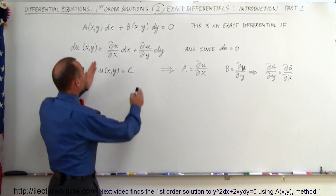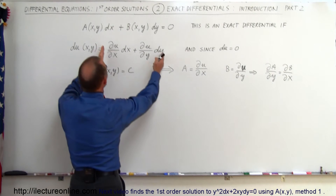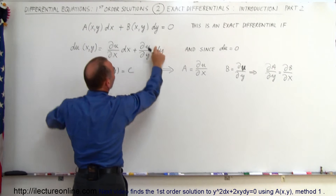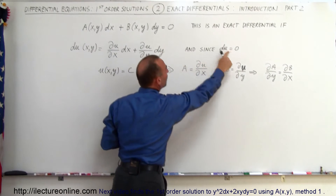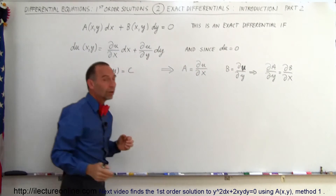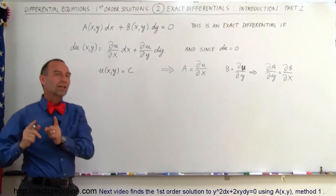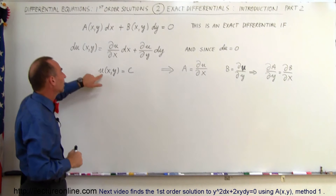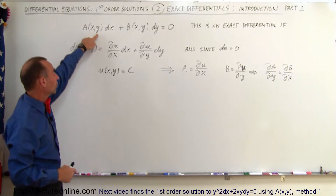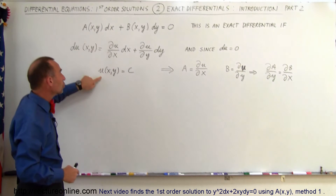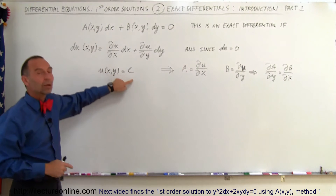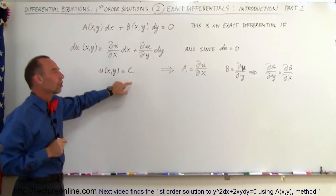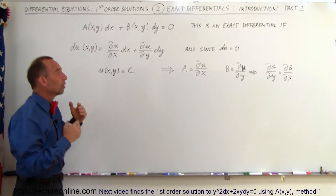Since this equation is equal to zero, that means du must be equal to zero as well, which means that if we integrate both sides we can say that the solution to the original differential equation, u, can be set equal to a constant. So that will be a key to helping us solve the equation.